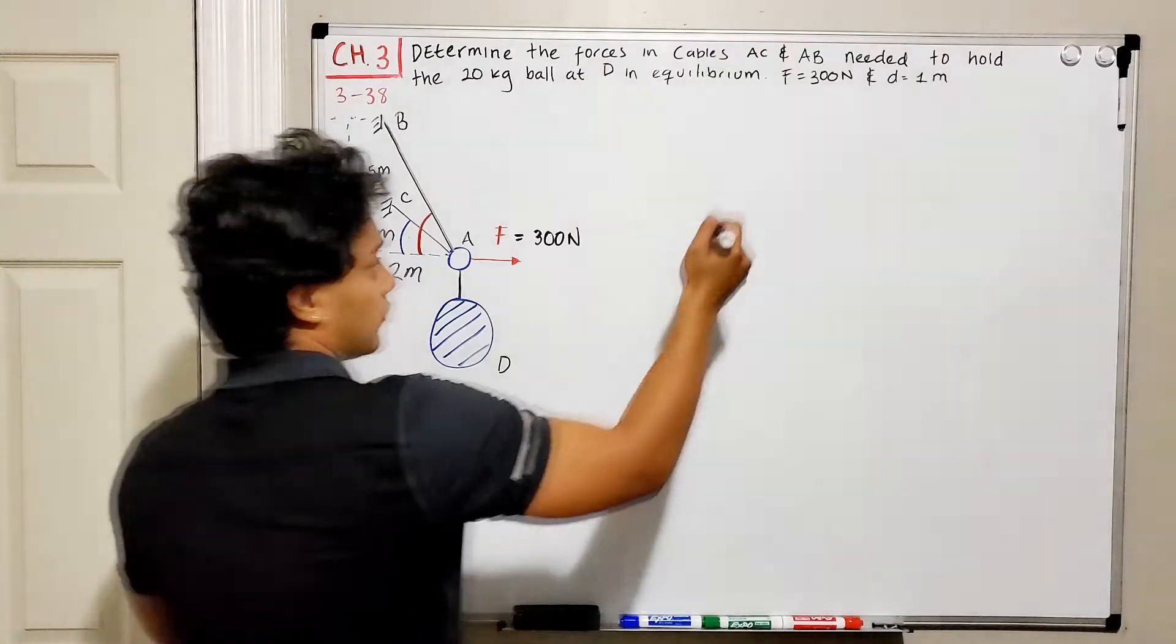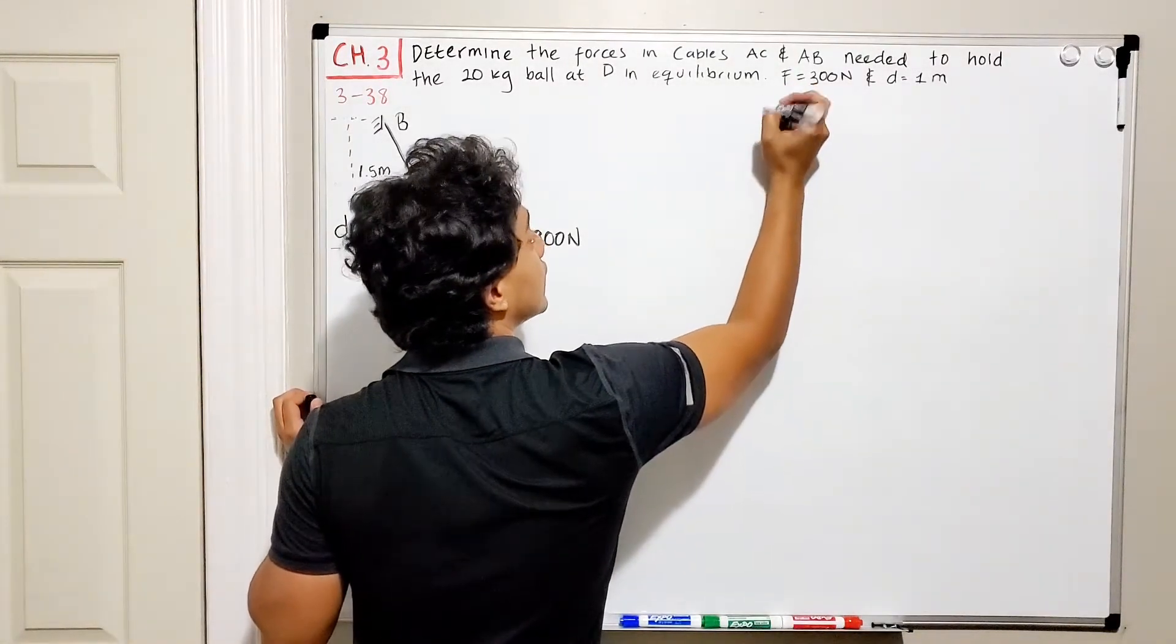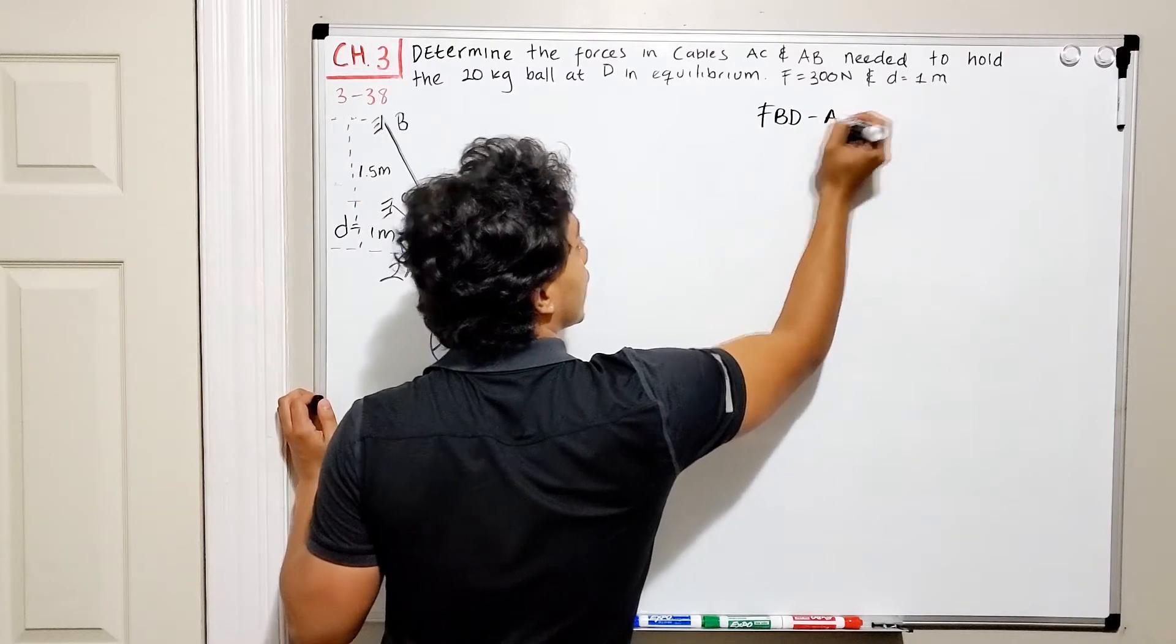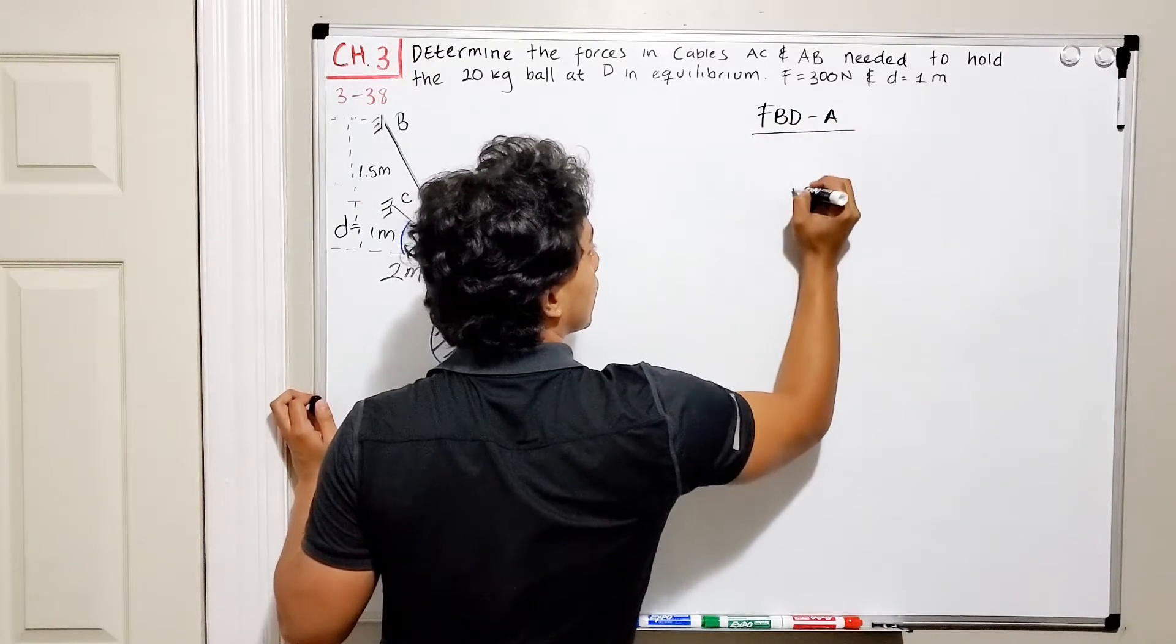So let's draw the free body diagram of this problem. If we do FBD of this problem at point A, so we will have